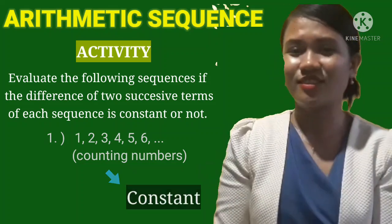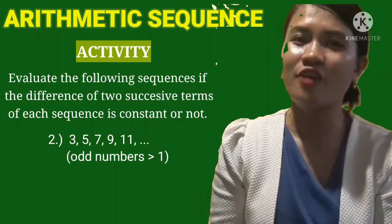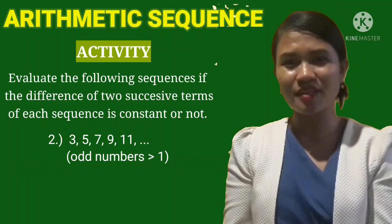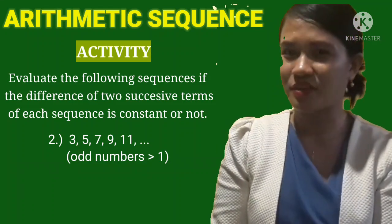So again, it is constant. How about the second given sequence? So we have odd numbers. The odd numbers is 3, 5, 7, 9, 11, and so on and so forth.